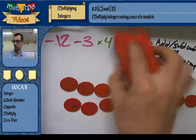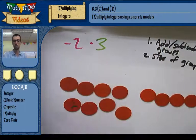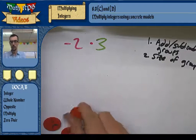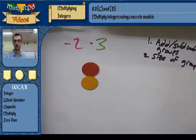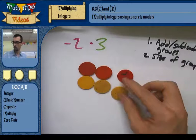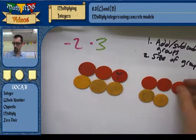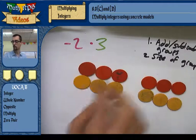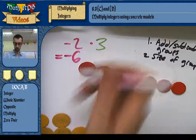Let's try a smaller one: take away 2 groups of 3, which is negative 2 times 3. Start with 0 — you have nothing on the table. How do you take away 2 groups of 3 from nothing? You invite in some 0-pair sums. That's still nothing because they add up to 0. I need two groups of 3 to take away. Now I can take away 2 groups of 3: 1, 2. And I get negative 6.